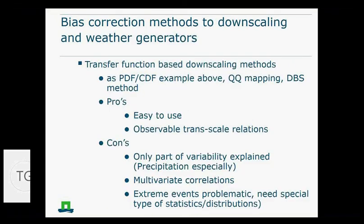You can use transfer corrections, downscaling methods like the PDF example. You can also use quantile methods or a DBS method. The pros are that they're relatively easy to use. The cons are that only part of the variability is actually explained by these. There's often multivariate correlations which you have to take into account. And for extreme events, it gets problematic because extreme events are, by definition, extreme and rare. So it's difficult to correct for that, and sometimes you need specific statistics.